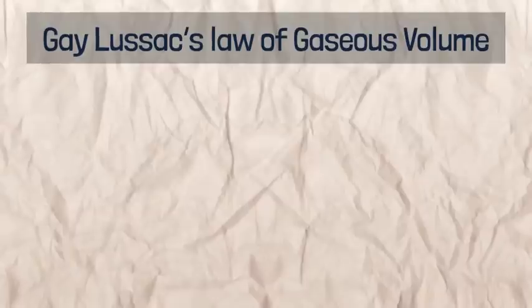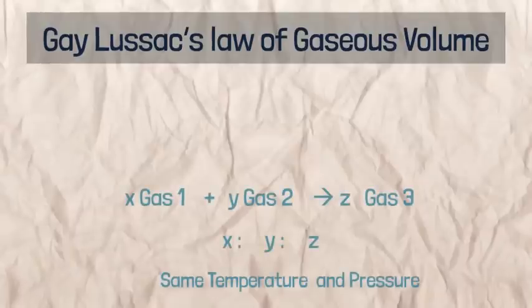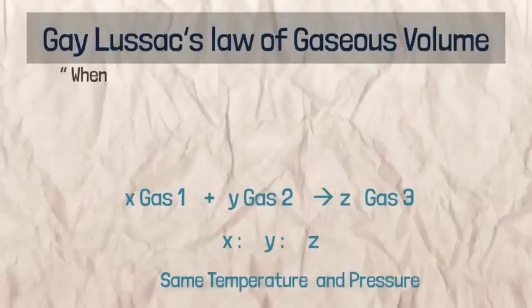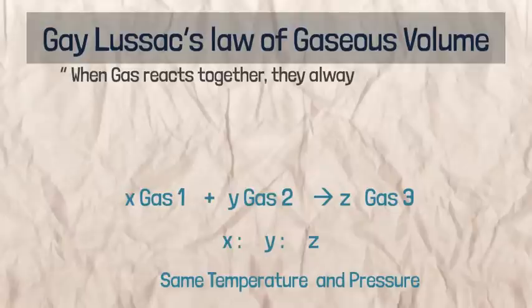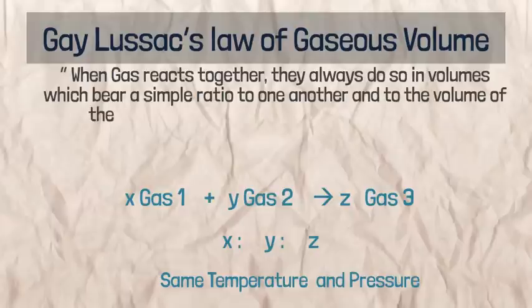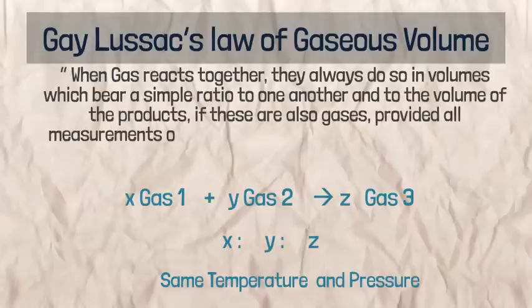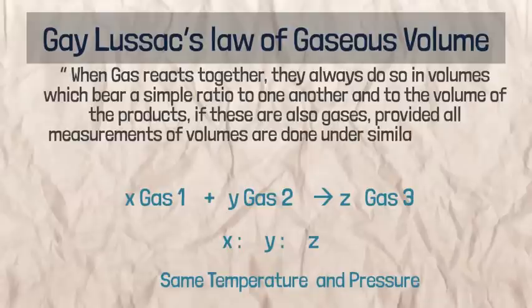Gay-Lussac's Law of Gaseous Volumes: If x volume of gas 1 reacts with y volume of gas 2 to form z volume of gas 3, then the ratio x:y:z will bear a simple whole number ratio, provided temperature and pressure remain the same. The law states: when gases react together, they do so in volumes which bear simple ratios to one another and to the volumes of the products, if these are also gases, under similar conditions of temperature and pressure.